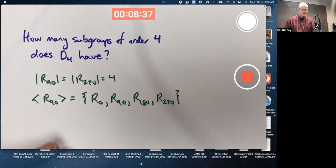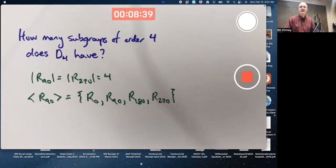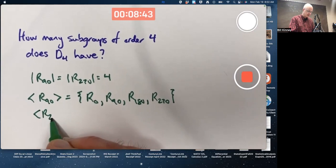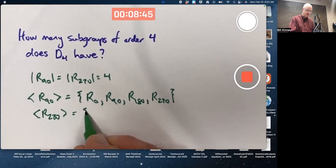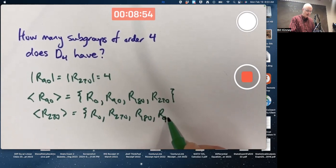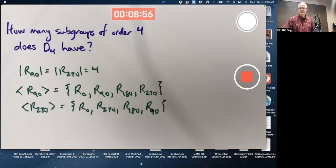If you think about R270 and its cyclic subgroup that it generates, you get the exact same thing. I mean, you could write it in the other order. R270 to the 0 power is R0, to the first power is itself, to the second power is R180, and to the third power is R90. However, as sets, those are the same set.